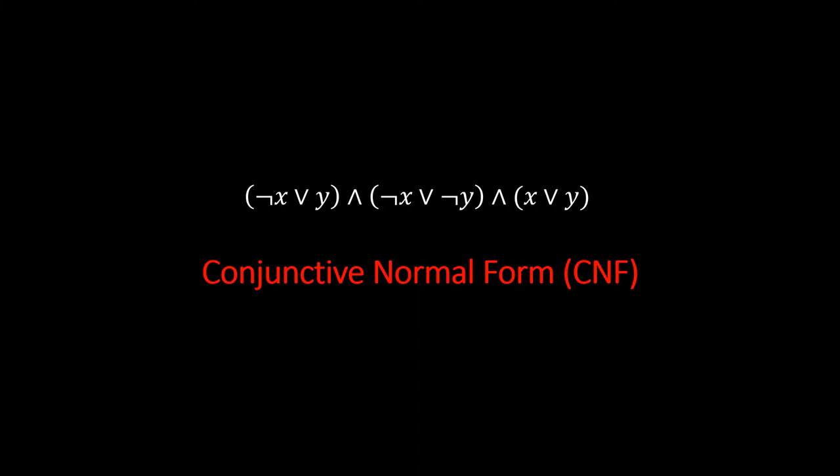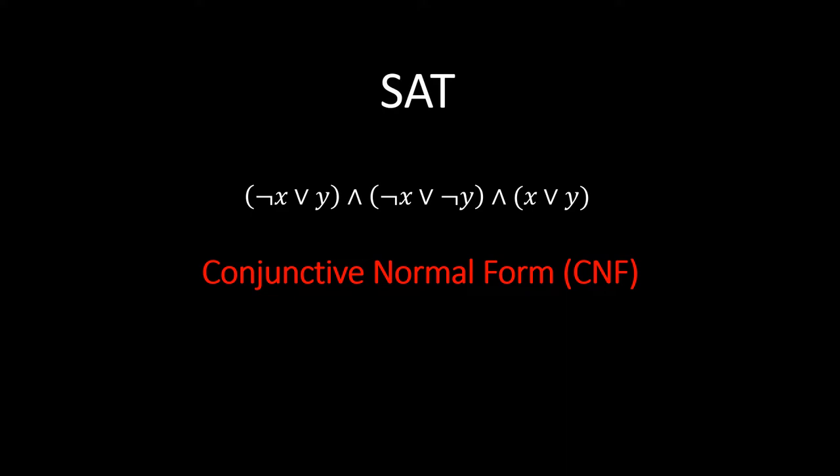Turning our attention to CNF formulas, what can we say about the computational complexity of the associated decision problem? Given a Boolean formula, is there a satisfying assignment? This problem is known as SAT, short for satisfiability. Notice that the problem is in NP, even for non-CNF formulas, because any satisfying assignment can act as a certificate. But still, finding a satisfying assignment seems very difficult. In fact, SAT is so difficult that it is an all-star problem, in other words NP-complete.